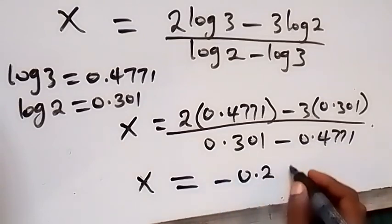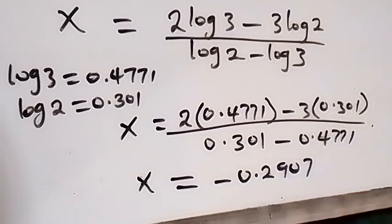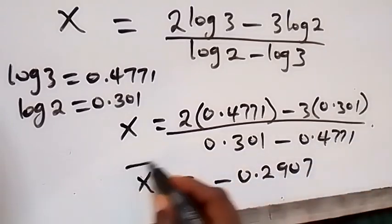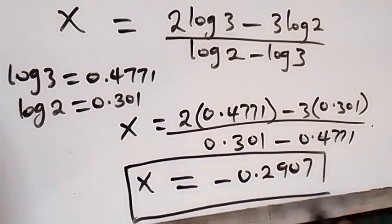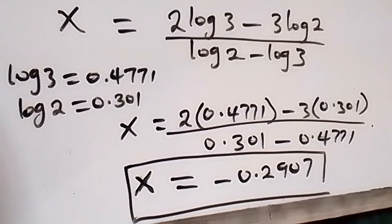Simplifying with a calculator, we get x equals minus 0.2907. This is the approximate solution to the problem. You can check if the value of x is correct by substituting it back into the original equation. Thank you for watching — don't forget to give a thumbs up and subscribe to my channel so as not to miss any of my uploads. See you in the next class, bye for now.